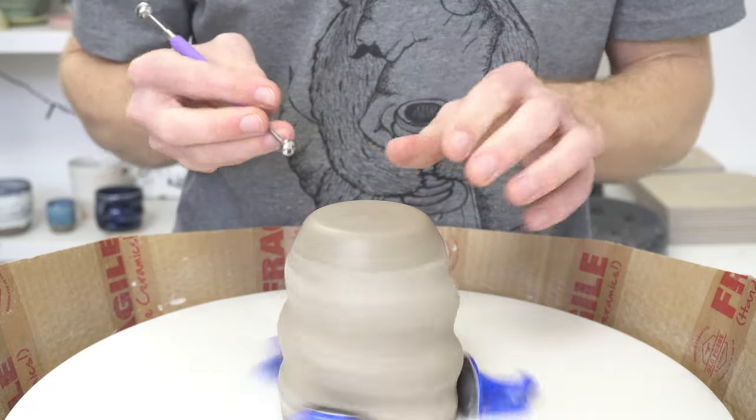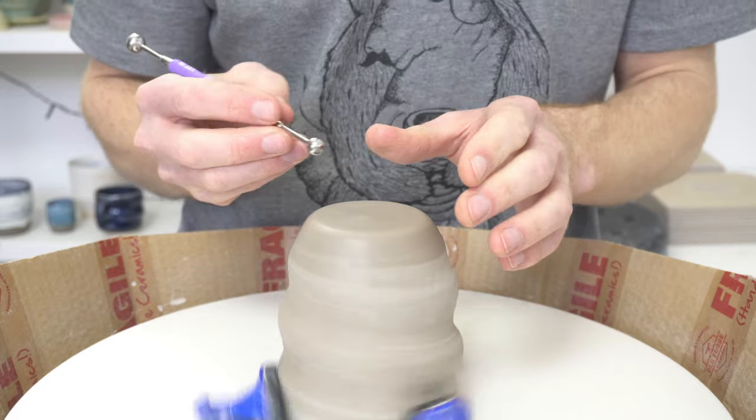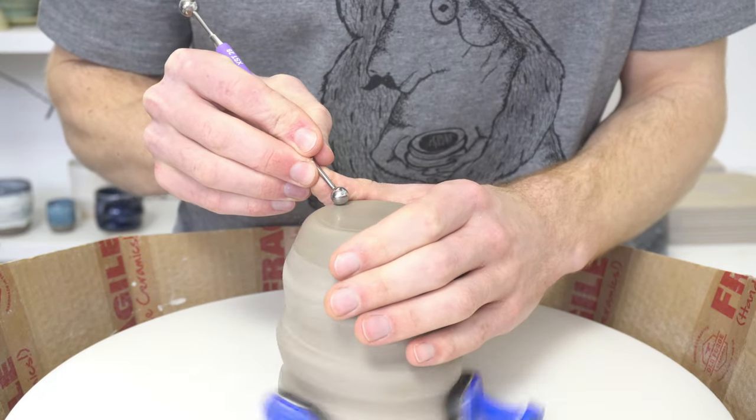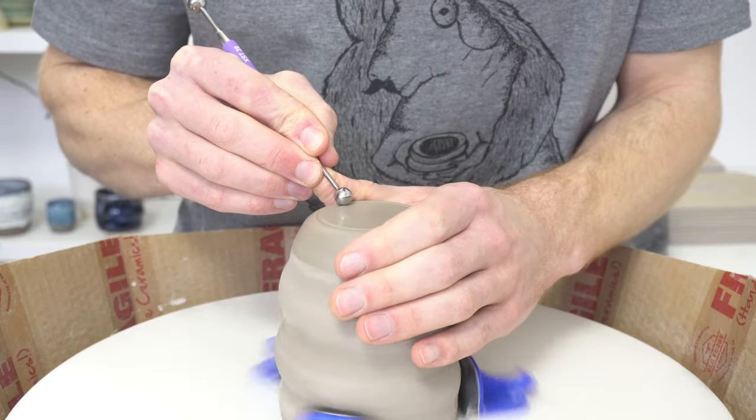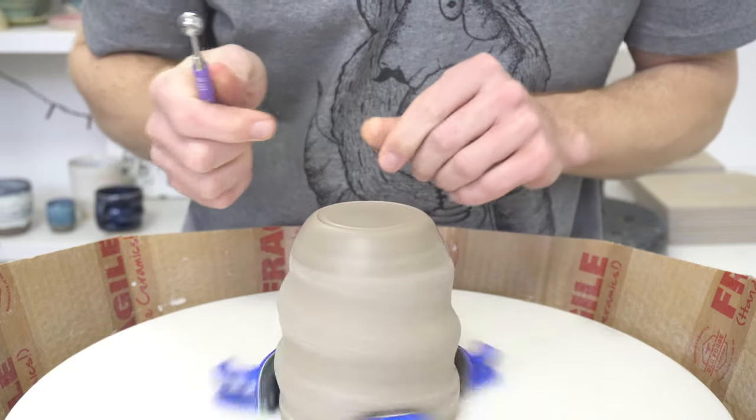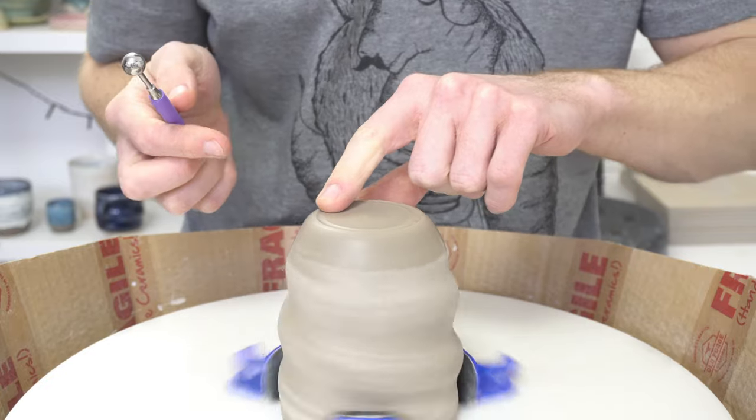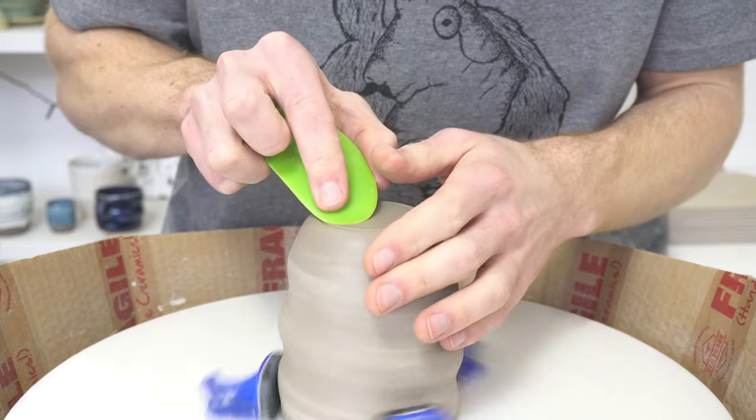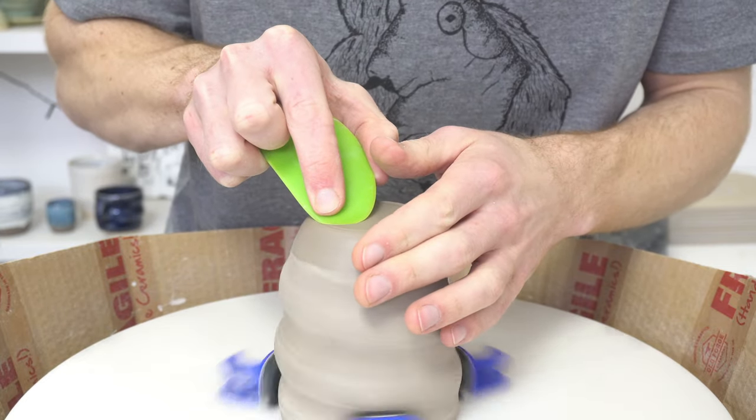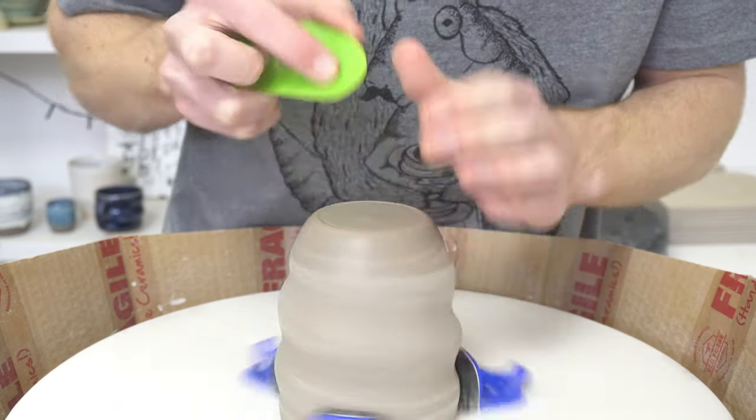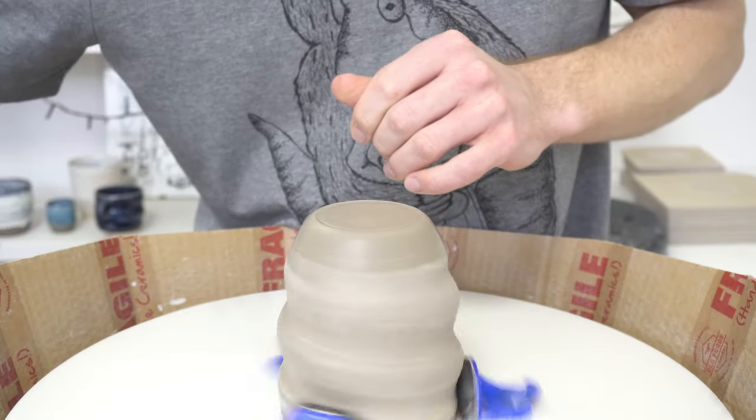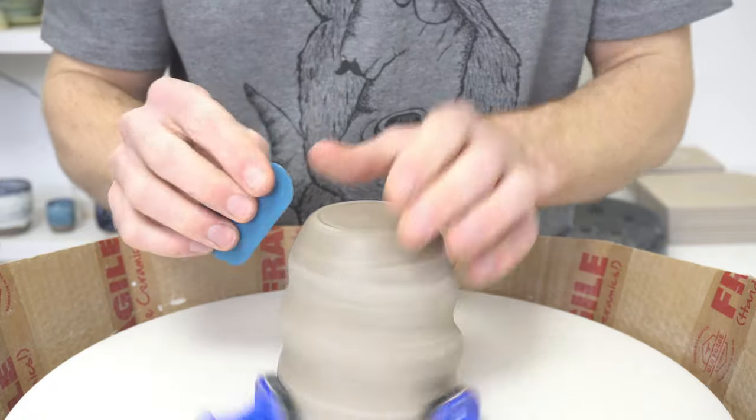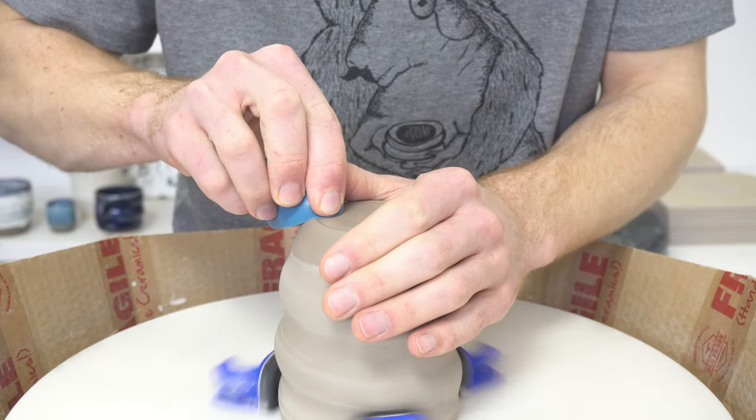But what I do is I burnish the centre bit smooth and then I take the ball modelling tool and I just press it in and you can see, hopefully, that I've defined the foot there. And what I've done is I've just rounded the clay and then smooth out the inner part of that and round over where it's fine.